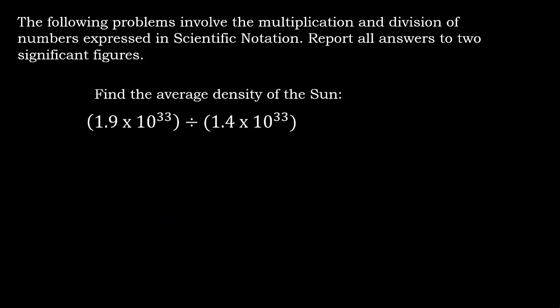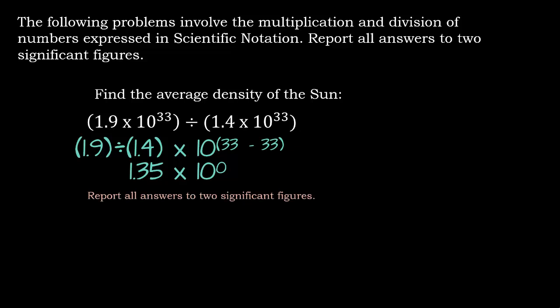Find the average density of the sun. In this case, NASA says we need to divide. So let's do it. We're going to take 1.9 divided by 1.4. And our exponents, when we divide, we're going to subtract. So we have 33 minus 33. This gives us 1.35 times 10 to the 0. So once again, we need to report all the answers to two significant figures. So we end up with 1.4 times 1. Did you remember that 10 to the 0 is actually 1? Sure is. So it turns out that our answer is 1.4 grams per centimeters cubed.